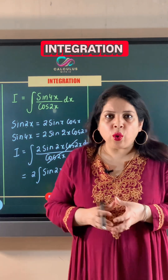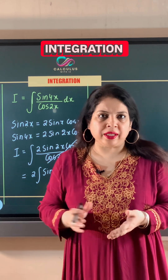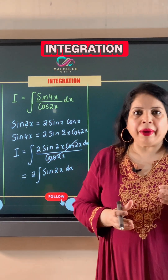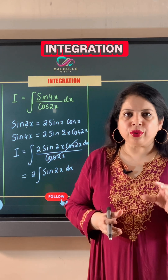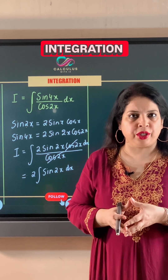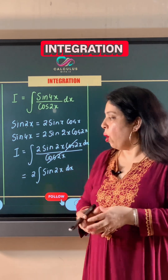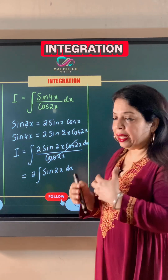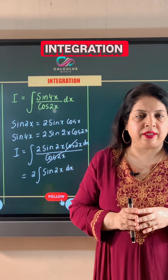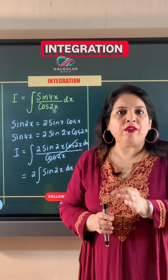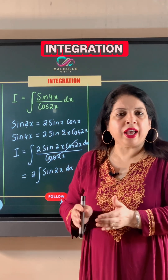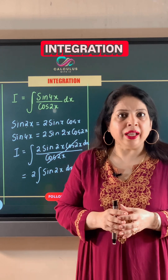We can also use substitution to find this integral by putting 2x equal to t, but a simple understanding is also sufficient so that we can avoid substitution. The key is that the integral of sin x is negative cos x. Instead of x, if we have any other angle of sin — in this case we have 2x as the angle of sin —